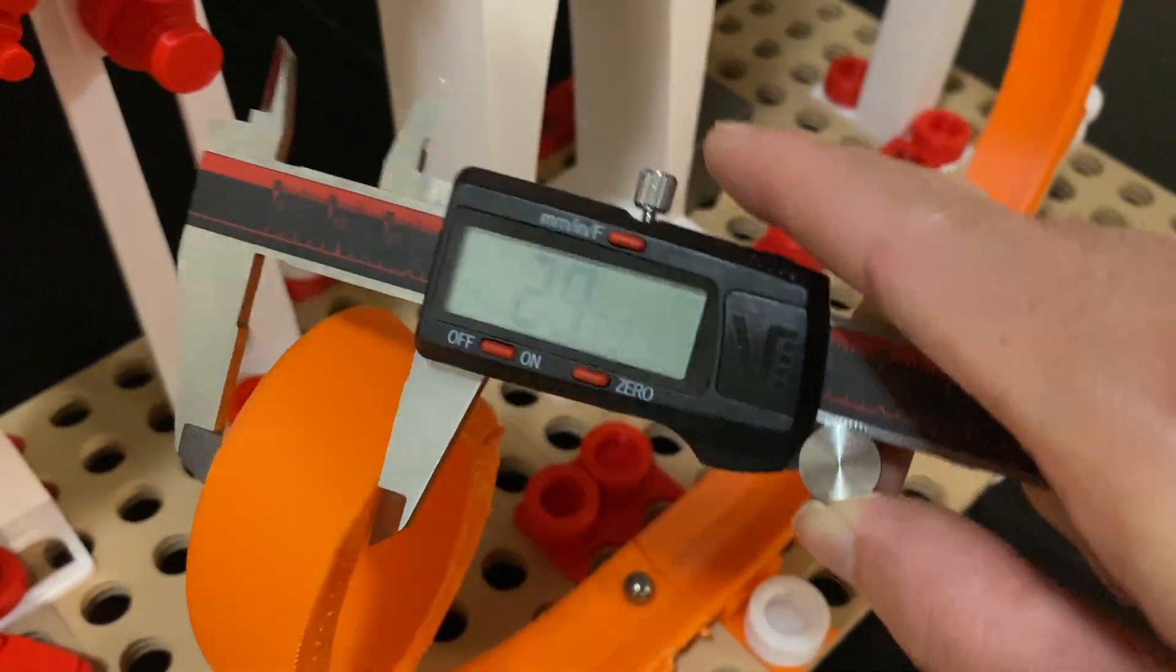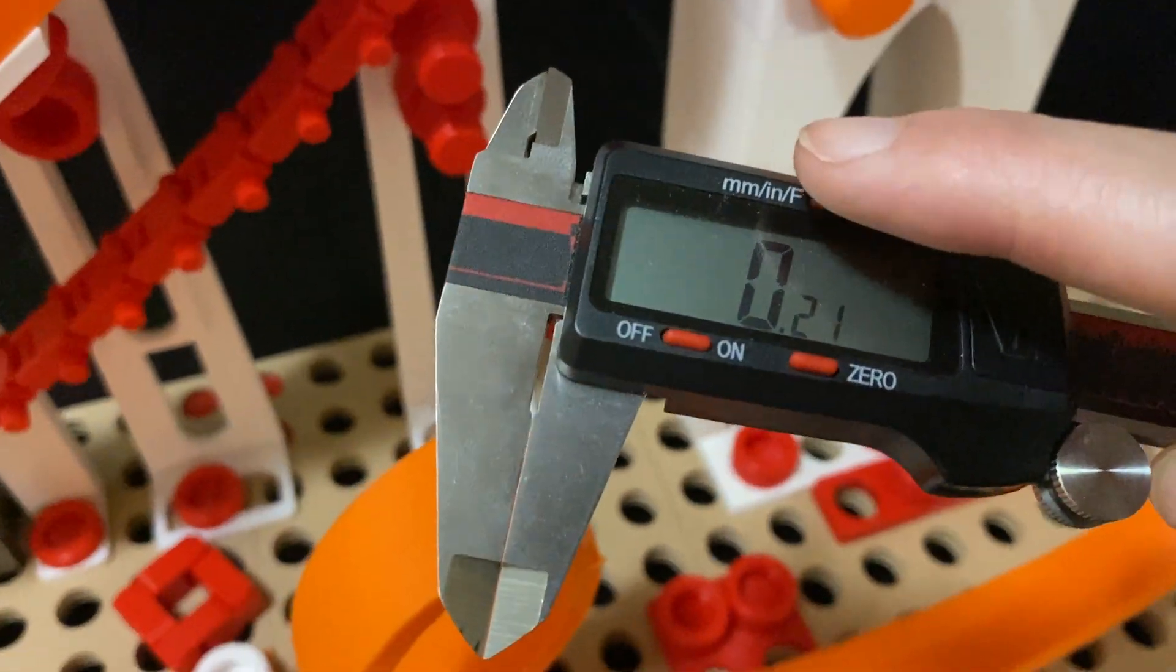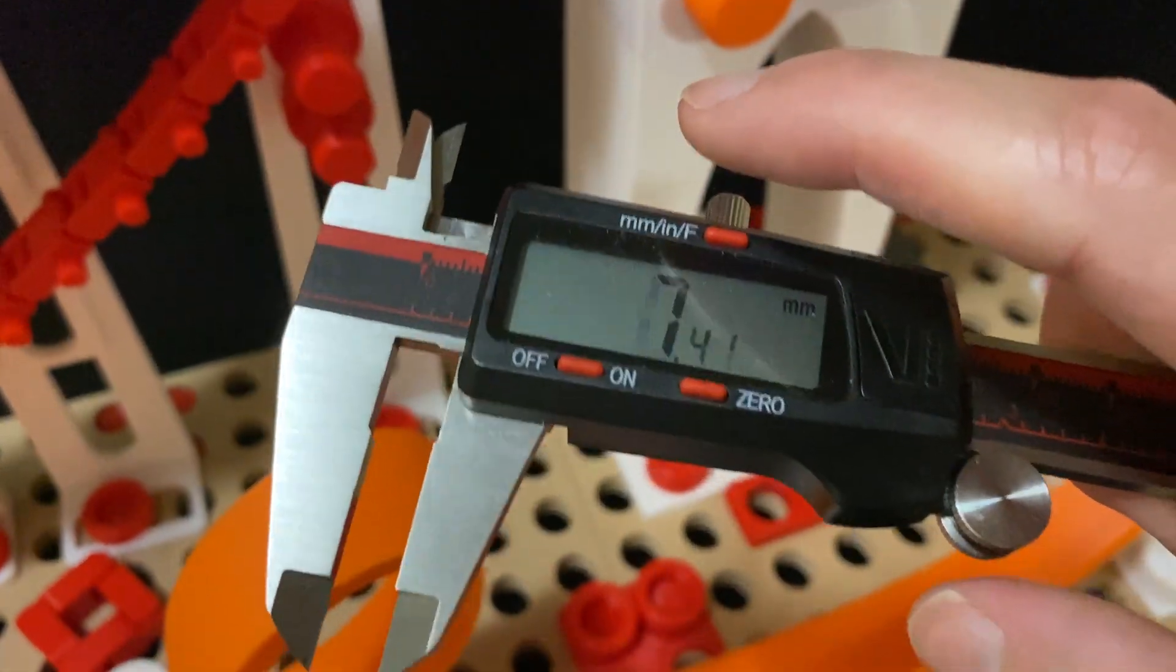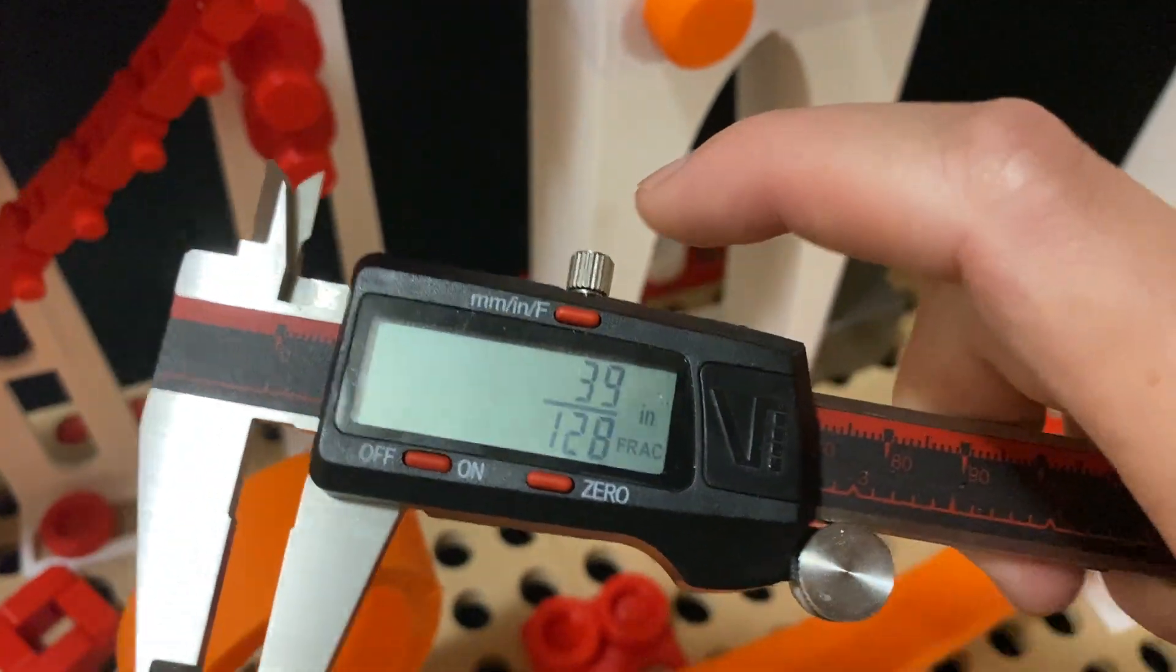For example, you could measure something like this. You can switch between millimeters, inches, and fractions. If I add some distance there, you can switch between inches in decimal and inches in fractions.